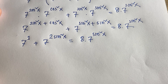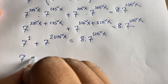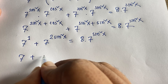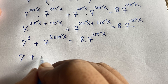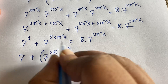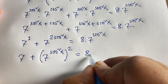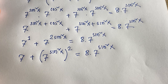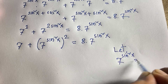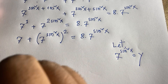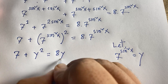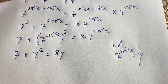Now, 7 to the power 2 sin squared x can be written as 7 to the power sin squared x, whole squared, because a to the power n times m equals a to the power nm. So the equation becomes: 7 plus the quantity 7 to the power sin squared x squared equals 8 times 7 to the power sin squared x. Let y equal 7 to the power sin squared x. Then: 7 plus y squared equals 8y. This gives us the quadratic equation: y squared minus 8y plus 7 equals 0.